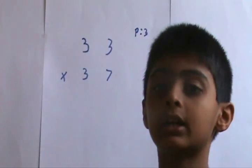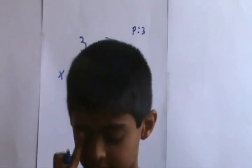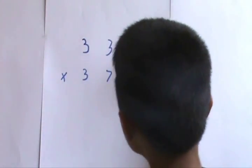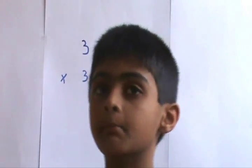The next step is to find the Eka Adhika. The Eka Adhika is the number one more than 3. So the Eka Adhika would be 4. The next step is to multiply these two numbers.